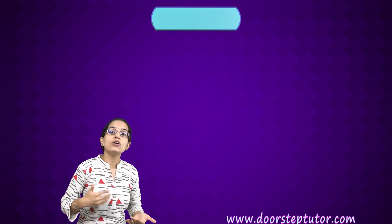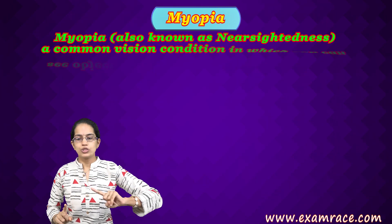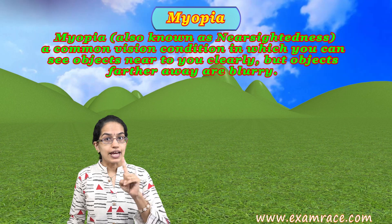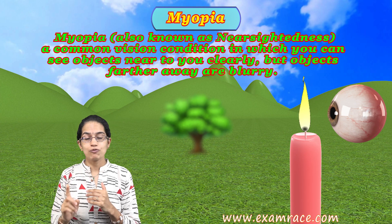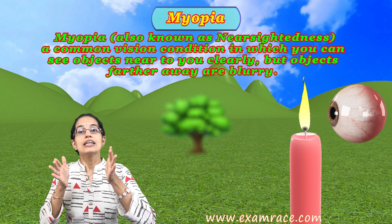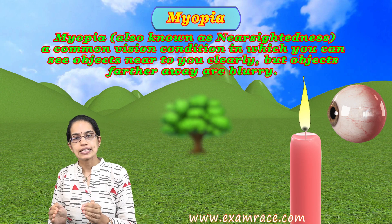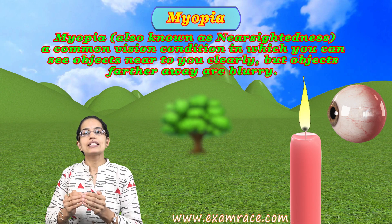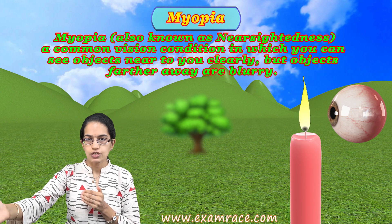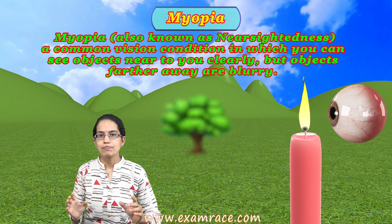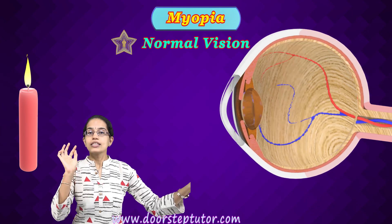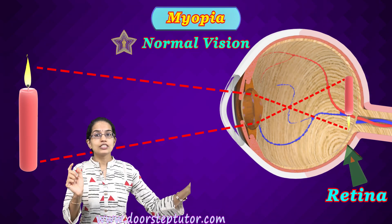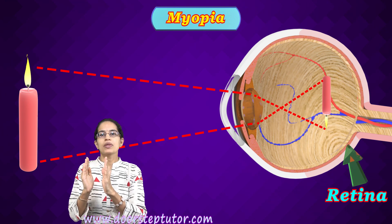The first defect we talk about is myopia. Myopia is also known as nearsightedness — that means near vision is fine but there is a problem with distant vision. In usual circumstances, an object's image should be formed on the retina. But in the case of myopia, the image forms before the retina.